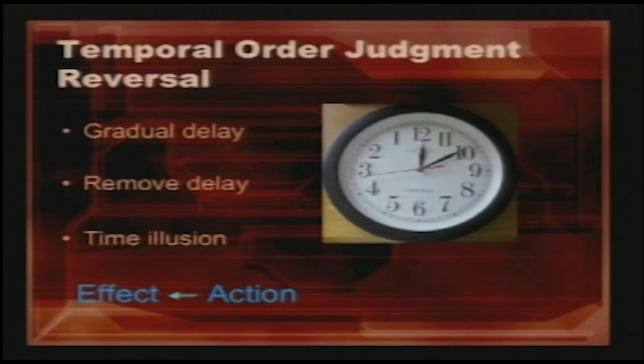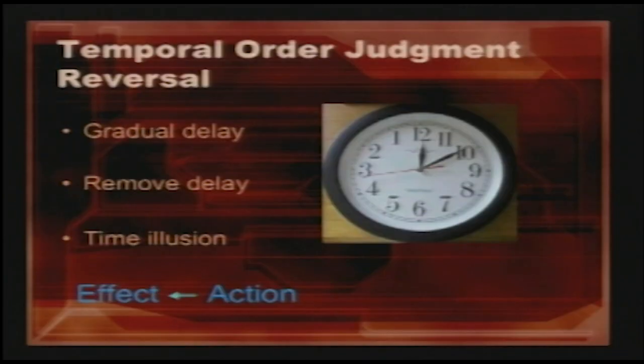So subjectively, you're causing events to happen in the past. To implement this illusion, we insert a series of gradual delays in between the actions and the effects. So we have a key press, then a 10 millisecond delay, then an image appearing. Then a key press, then 20 milliseconds, then an image appears. We keep doing this over and over again, increasing up to around 200 milliseconds. We do this gradual delay incrementation to adapt the person and modify their perception of time. Then after we modify their perception of time, we completely remove the delay, and this causes the time illusion.